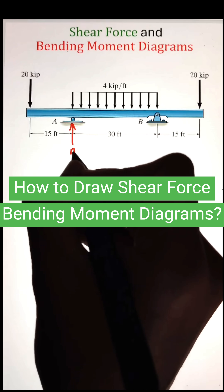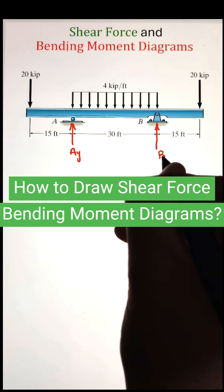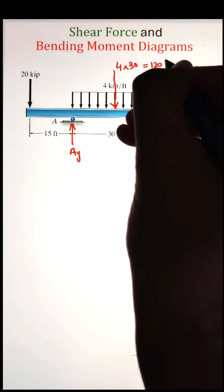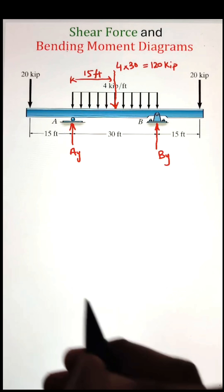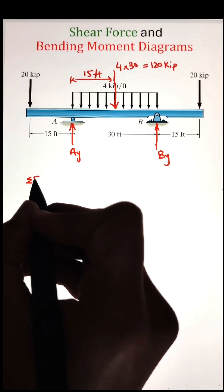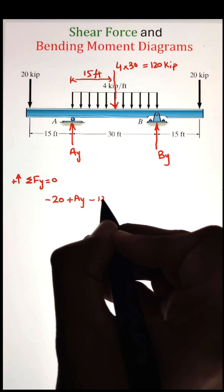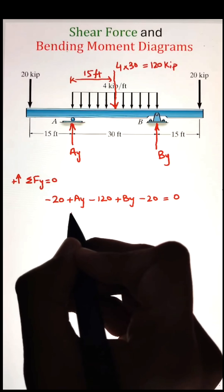In order to figure out the shear force and bending moment diagram, the very first thing we have to do is figure out the support reactions. Here we have a roller support at point A and a pin at point B. Since rollers provide support in the vertical direction, we have a force acting vertically upward as AY, whereas a pin provides support in both horizontal and vertical directions. However, since all the loads are acting vertically downward, we will have the support reactions only going vertically upward as BY.